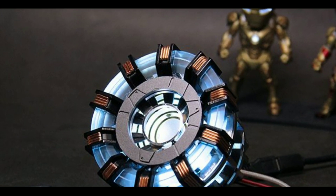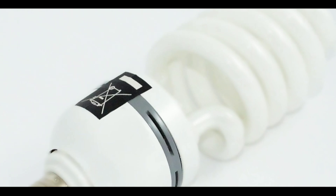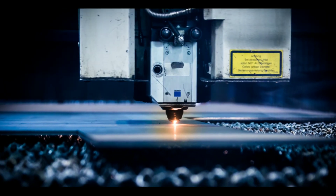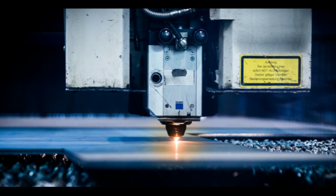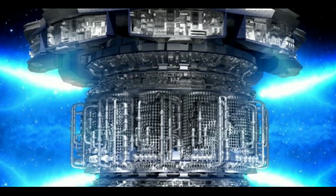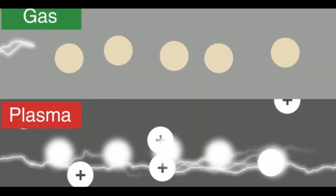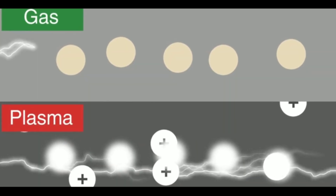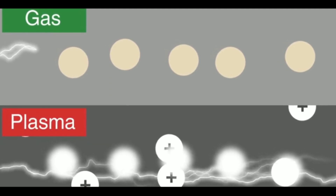Plasma is used in tube lights and fluorescent bulbs. Plasma laser technology is also used in laser cutting. Plasma is essentially an ionized gas that carries electrical power.